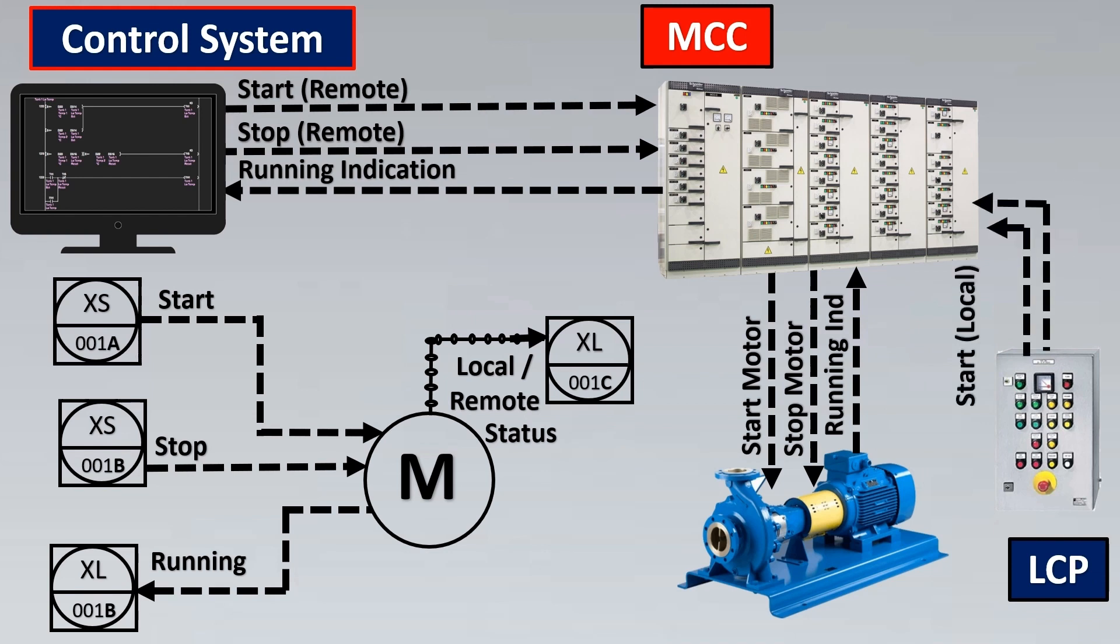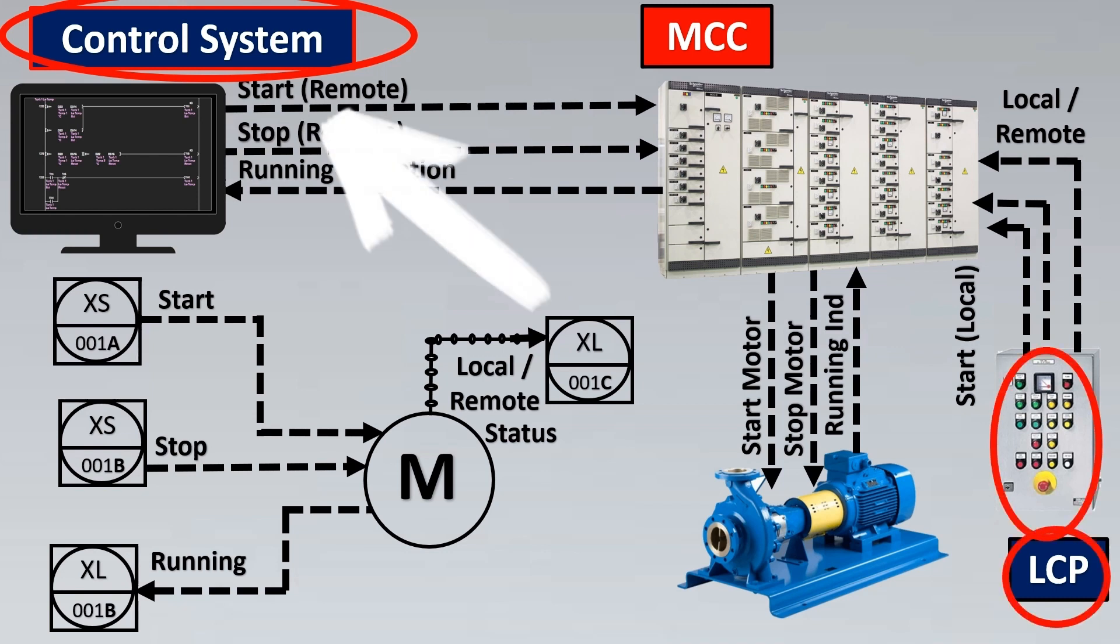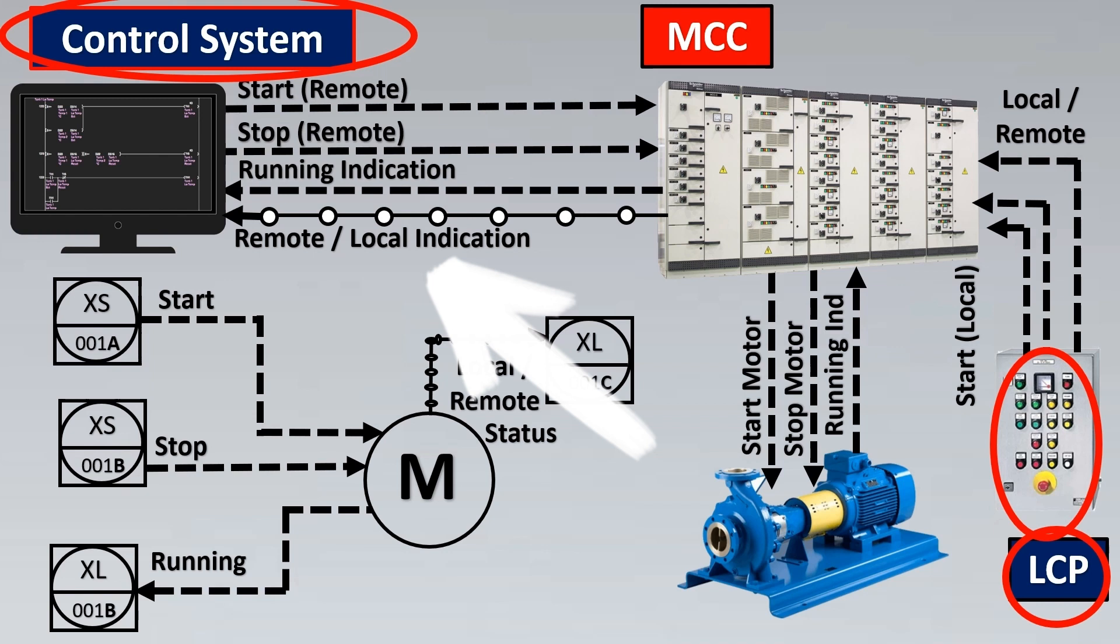This means you can start the motor, stop the motor, and have the local remote indication transferred back to your control system. Sometimes you can control the motor via control system, sometimes via LCP. How would the operator know if the motor is in operation via control system commands or the local control panel? For that we have a remote local indication. This signal sometimes is a soft signal, which helps us understand if this motor is working in remote mode via control system or local mode via local control panel.